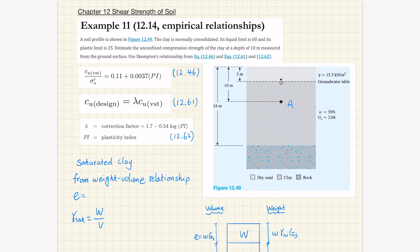Example 11 is another example using empirical relationships to determine the undrained shear strength. Or for this example, it's actually the unconfined compression strength of cohesive soil. For this example, you're given a soil profile as shown in this figure here. So there are two types of soils.